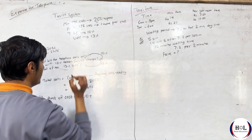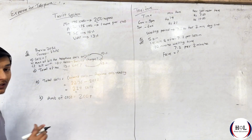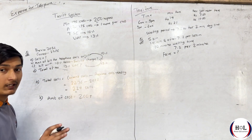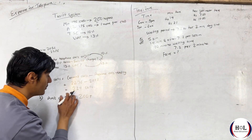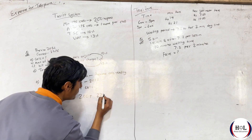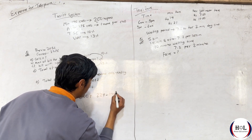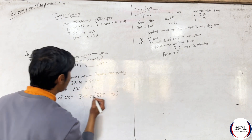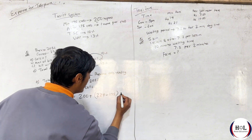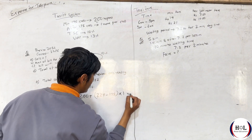We need to do 175. 175 plus 224. 224 minus 175. And the excess is 49 rupees.